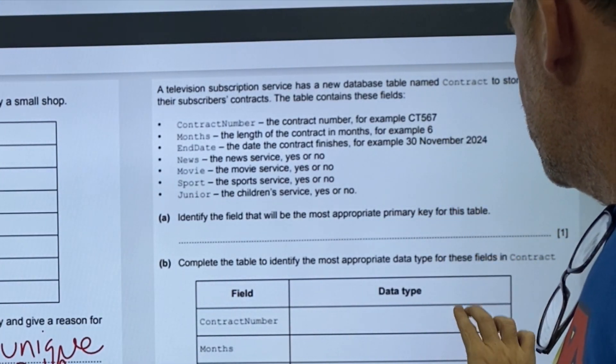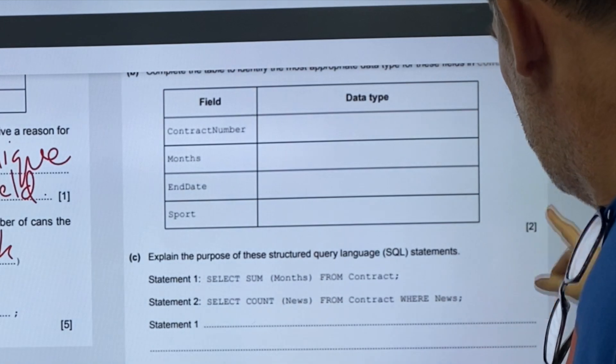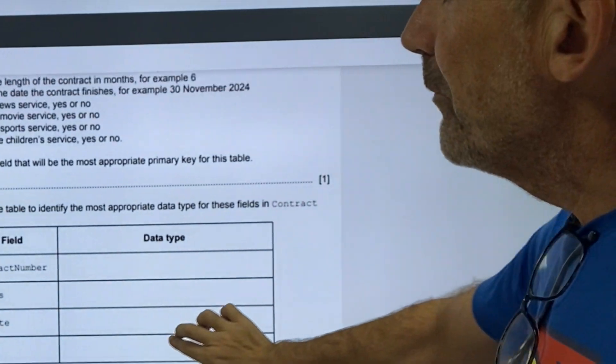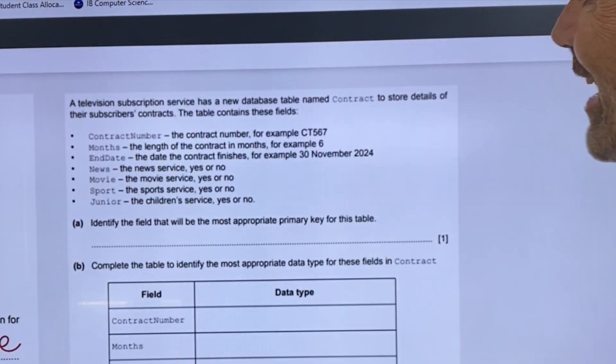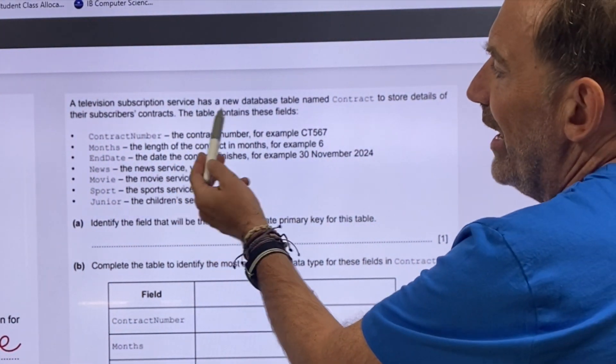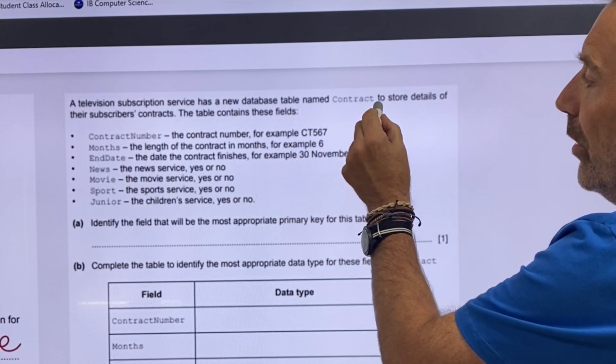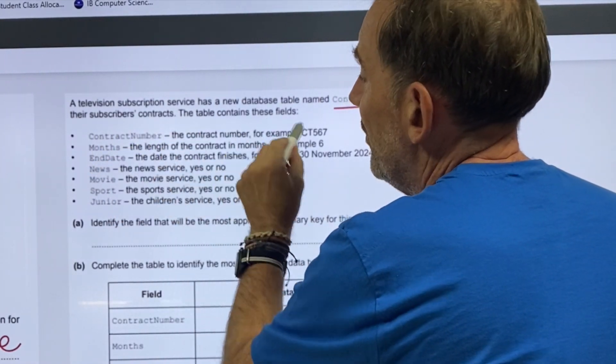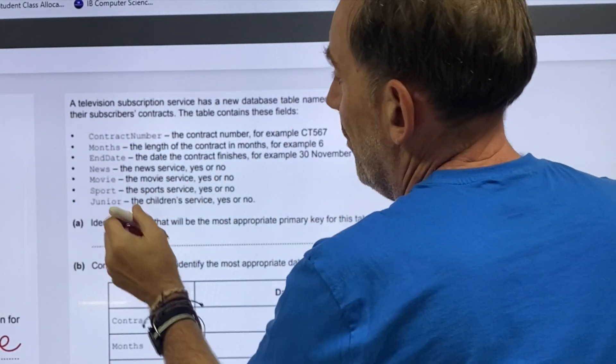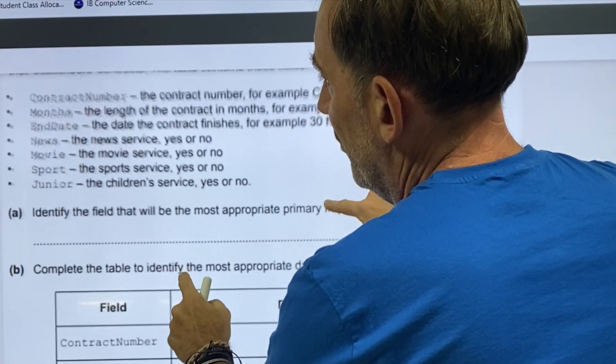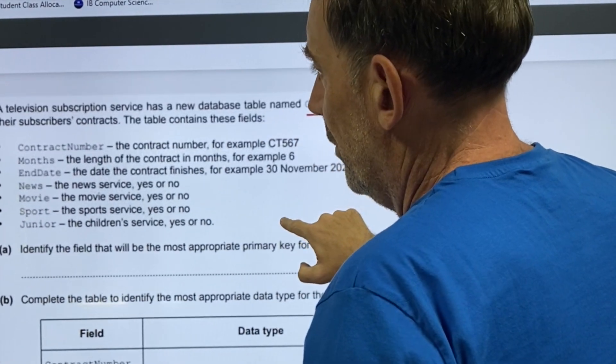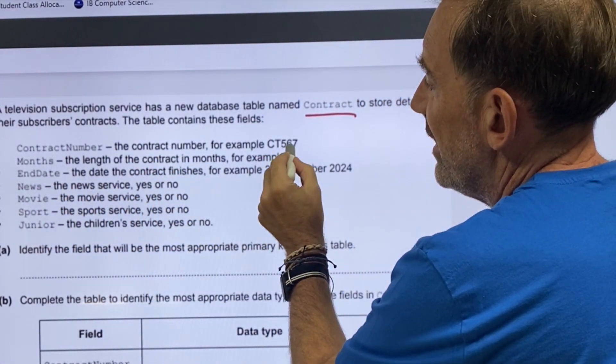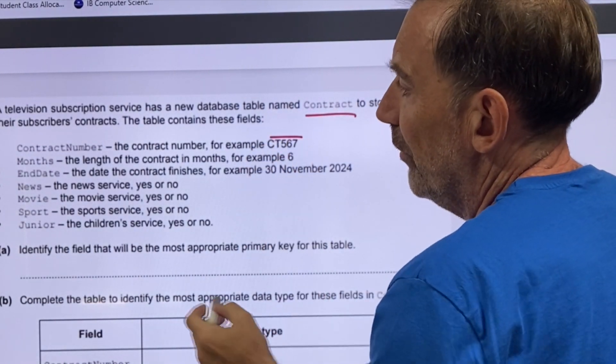Next question. A television subscription service has a new database table called contract to store details of their subscribers' contracts. The table contains these fields. The contract number, let's make it a bit bigger. The contract number, for example, CT by 6-7. That looks like a unique number.